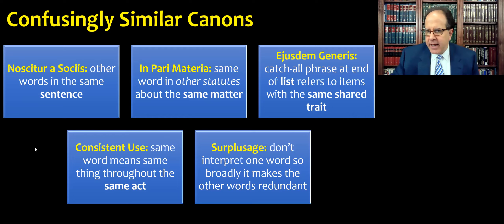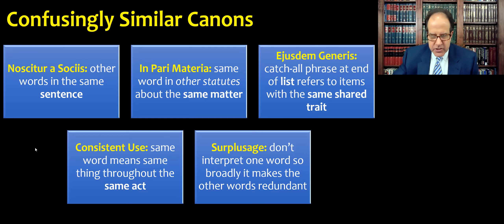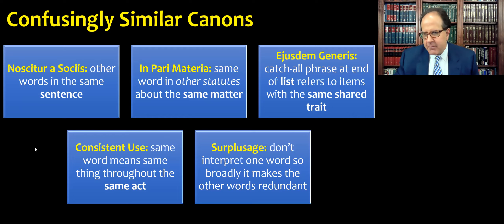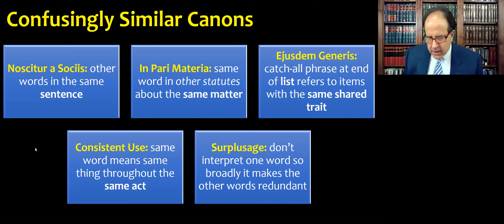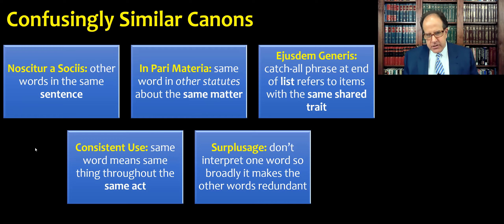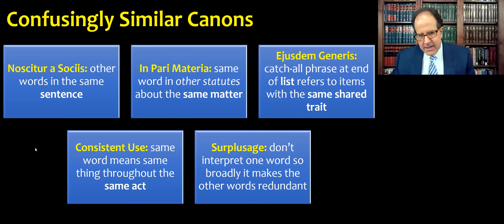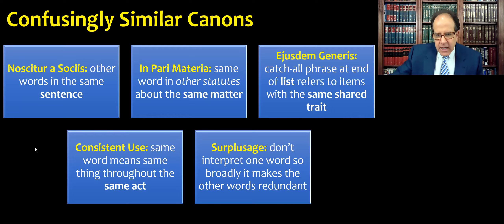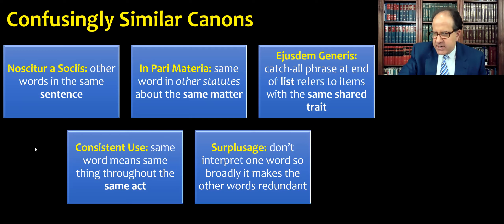Ejusdem generis is when we have a catch-all phrase at the end of a list of specific items that share some common trait — we assume the catch-all doesn't make the statute apply to absolutely everything, but rather to other things that could have been on that list. The consistent use canon is the same word looked at within the same act — narrower than in pari materia, but assuming the same drafting committee used a word the same way throughout one statute. And the surplusage canon means don't interpret one word so broadly that it makes other words redundant or meaningless — every word is there for a reason and should be given its own meaning.